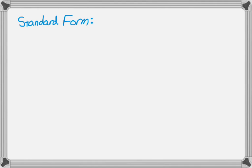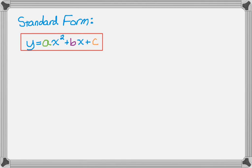So what we're going to use is something called standard form, and standard form looks like ax squared plus bx plus c equals y, or y equals ax squared plus bx plus c.